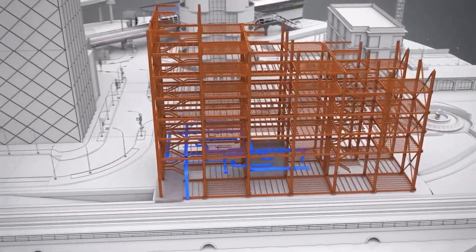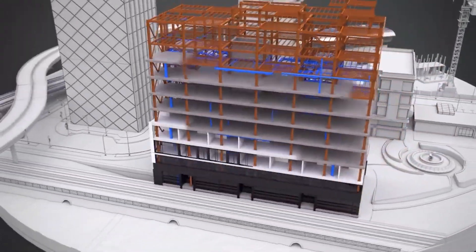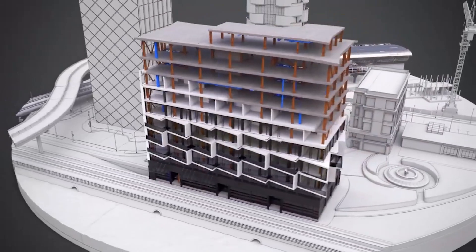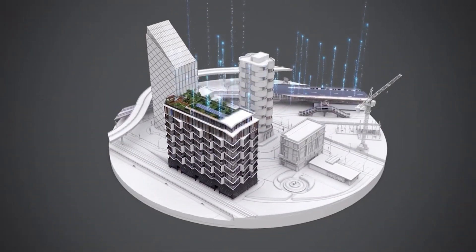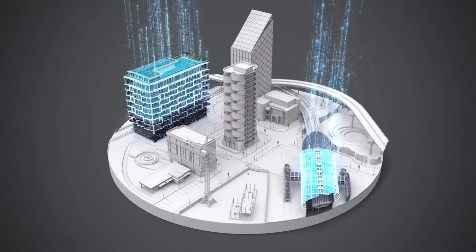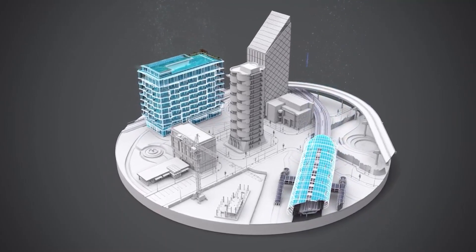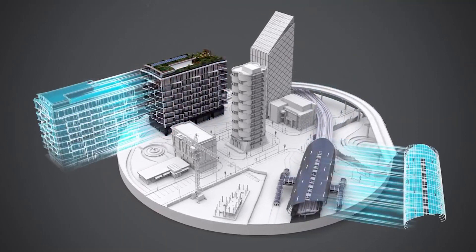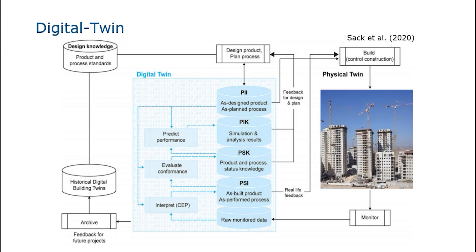A digital twin can describe real objects beyond pure information. It contains algorithms that support decision making on operations in the production system based on process data. Raphael Sacks conducted a study on construction using a digital twin information system based on project status, project information, and knowledge.